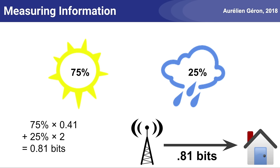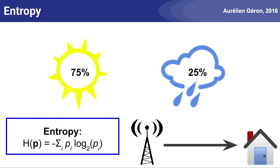So what we just computed is called the entropy. It's a nice measure of how uncertain the events are. It measures the average amount of information that you get when you learn the weather each day, or more generally, the average amount of information that you get from one sample drawn from a given probability distribution p. It tells you how unpredictable that probability distribution is. If you live in the middle of a desert where it's sunny every day, the entropy will be close to 0. Conversely, if the weather varies a lot, the entropy will be much larger.